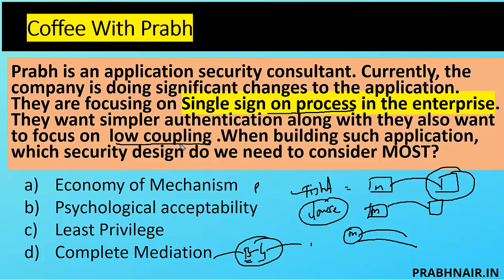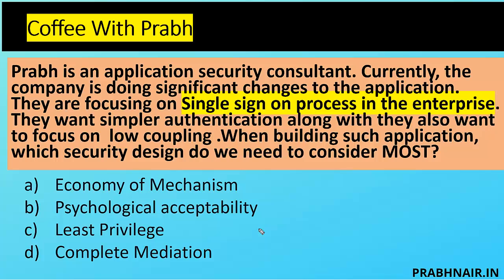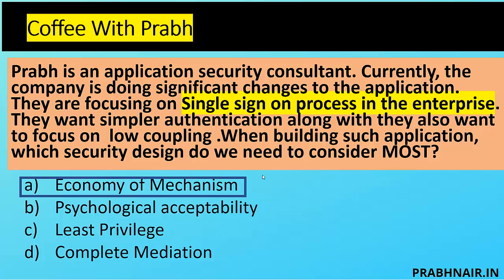Low coupling means it is easily manageable. When building such an application with security design, the options are economy of mechanism, psychological acceptability, least privilege, and complete mediation. Psychological acceptability is removed — not relevant. Least privilege is opposite since single sign-on grants access to everything. Complete mediation makes sense for every access requiring authorization, but single sign-on authenticates only once. This is the example of economy of mechanism, also called 'keep it simple.' Economy of mechanism: keep the code simple and clean — a simple environment is easy to manage. That is why the answer is A.